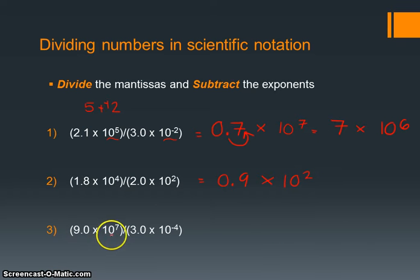Over here, the bases are the same, so we can simply subtract the exponents. Taking care of the mantissas first, 9 divided by 3 gives us 3 times 10 to the, that's 7 minus negative 4, which is like plus 4, so 10 to the 11th power.